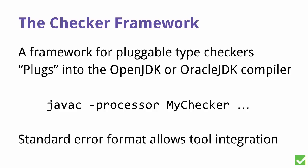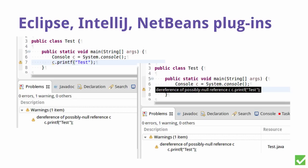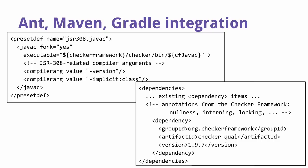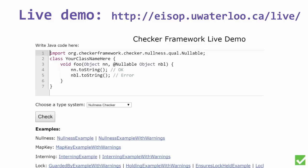The Checker Framework is a plug-in to the Java compiler that you run as an annotation processor. Because it uses the standard Java compiler message format, it's easy to integrate into all the different build tools. We provide an Eclipse plug-in, and it's easy to integrate in NetBeans and IntelliJ. We also provide instructions for Maven, Gradle, and a few other build systems. Finally, we have a website where you can run small snippets and play around with the different type systems.